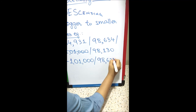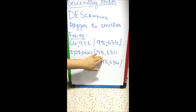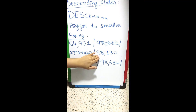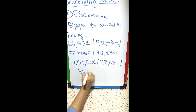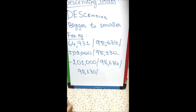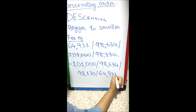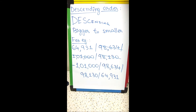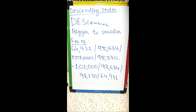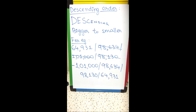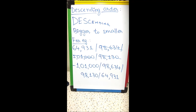Cancel out 98634. Now we have 64000 and 98000 — obviously 98000 is bigger, so 98130 is arranged third, and the last remaining number is 64931. So students, comparing numbers and ascending/descending order go hand in hand — the methods are the same. In comparing numbers you compare only two, but in ascending and descending order there can be many numbers to arrange. Thank you.